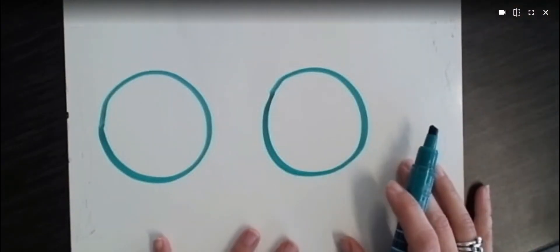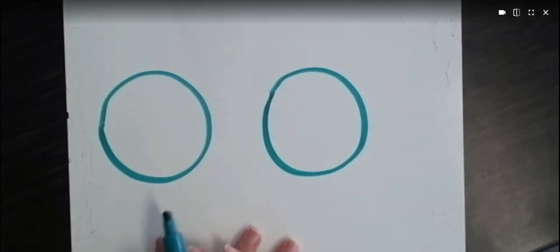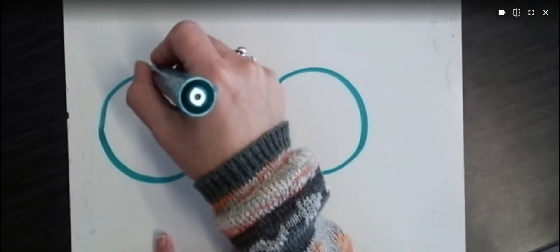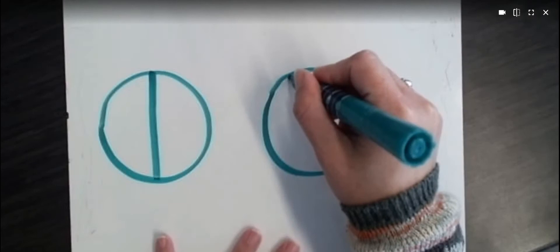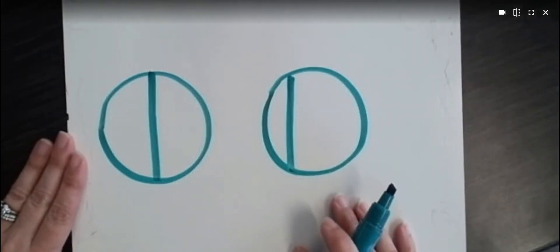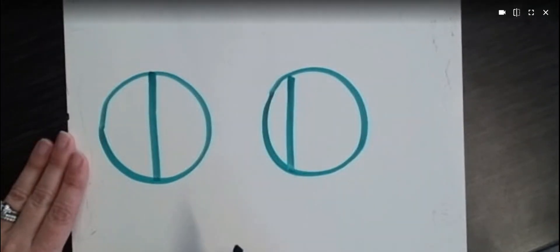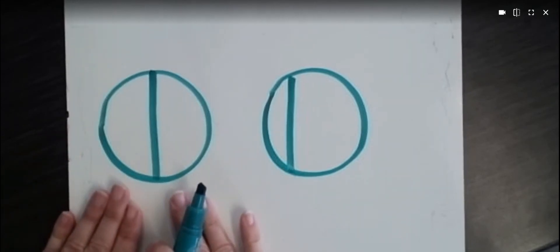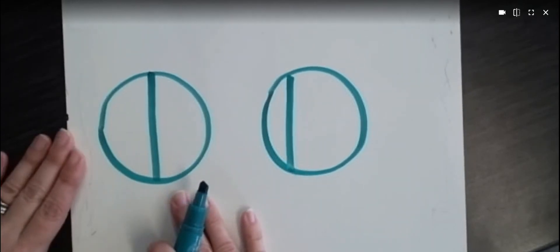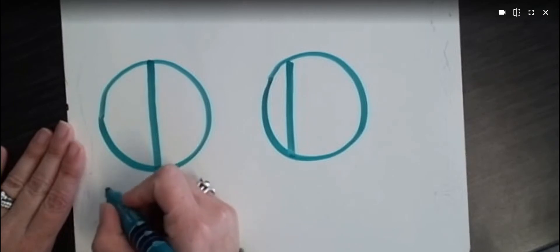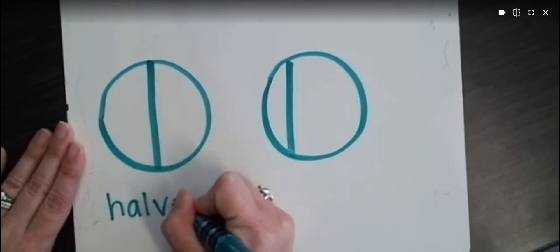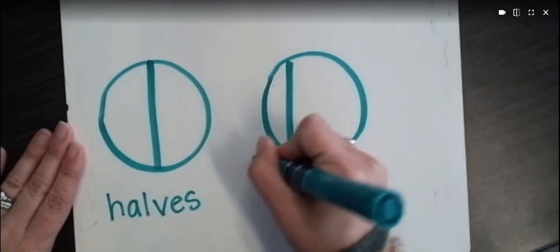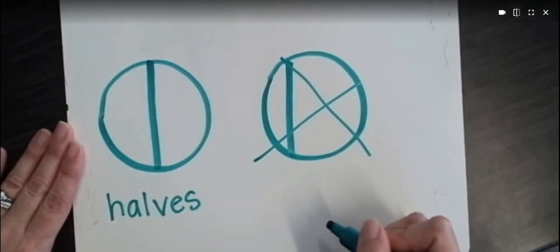So I've drawn two circles here on my board, and I'm going to divide them in different ways. So they're both divided into two parts each, but only this one is divided into equal parts. So we can say that this one is divided into halves, but this one is not because its parts are not equal.